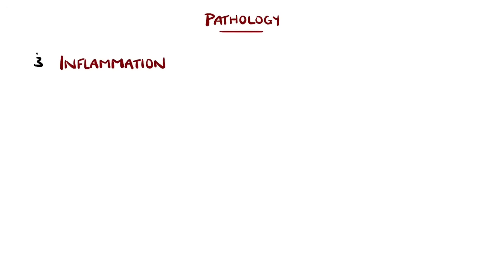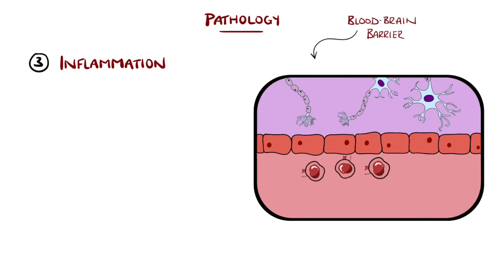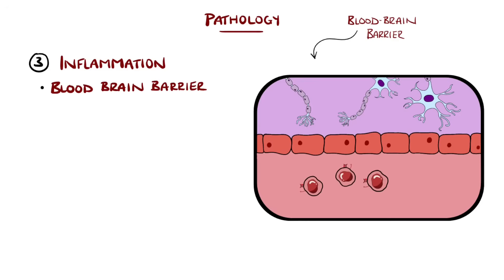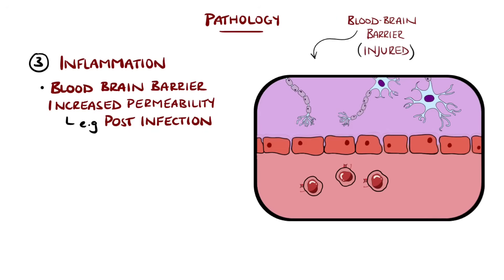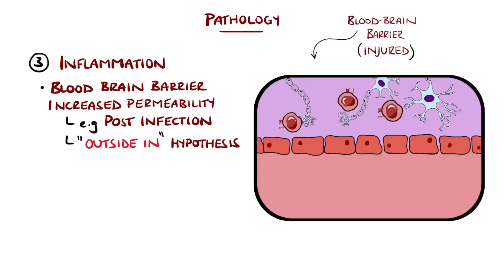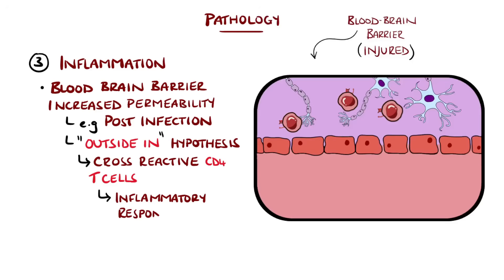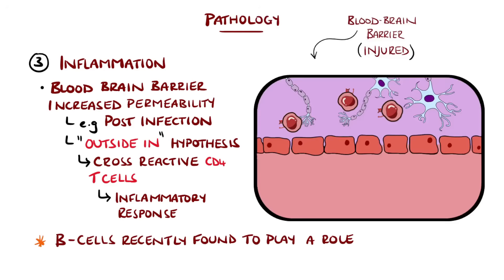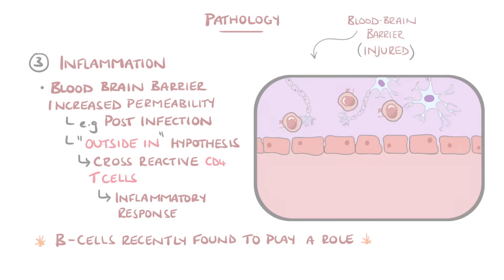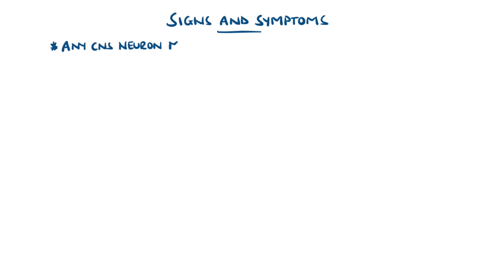Normally the blood-brain barrier prevents immune cells from reaching the central nervous system. However, in certain situations such as after an infection, the barrier can become injured and more permeable, allowing immune cells through. This is known as the outside-in hypothesis, where CD4 T helper cells in particular are thought to mount an immune response against myelin through cross-reactivity, leading to recruitment of other cells and development of an inflammatory reaction. More recently, B cells and antibody production have also been found to play a role.